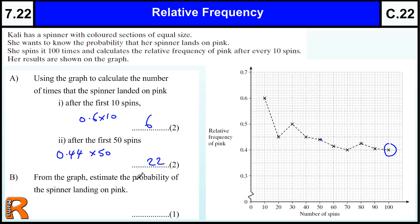So, from the graph, estimate the probability of the spinner landing on pink. So, we use this value, which is 0.4. So, if we had multiple people doing experiments, we'd always pick the person that's done the most trials. That will give us the most accurate results.